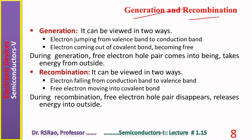Regarding generation and recombination: inside a semiconductor, whether intrinsic or extrinsic, as long as it is above zero kelvin, two things continuously keep happening — generation and recombination. Generation involves creation of electron-hole pairs when an electron comes out of a covalent bond: a free electron comes into being, and simultaneously a hole also comes into being. Both are charge carriers.